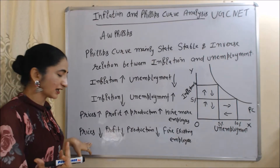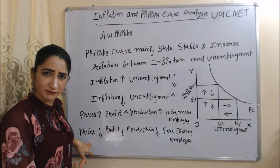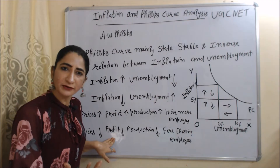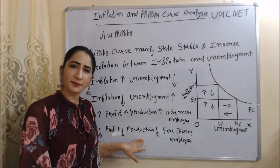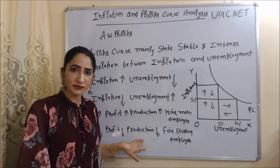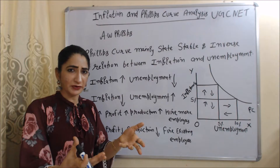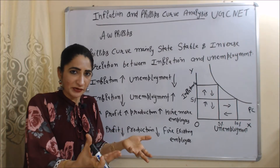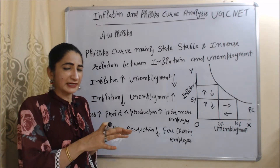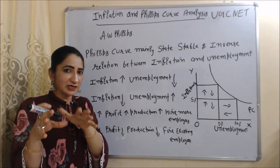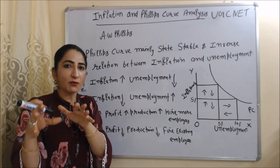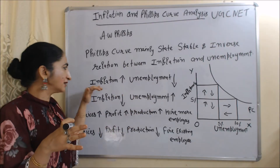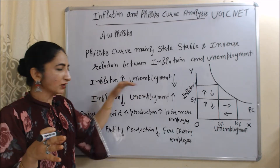On the other hand, if inflation falls, that means prices of goods and services are reducing. If prices are reducing, the profit of the producer is reducing. As a result, production will reduce, so he will not hire new employees and will even start firing existing employees. So we can say that inflation and unemployment have an inverse relation according to the Phillips Curve.